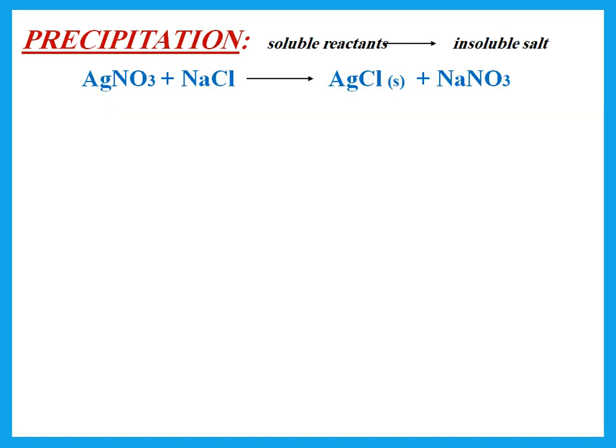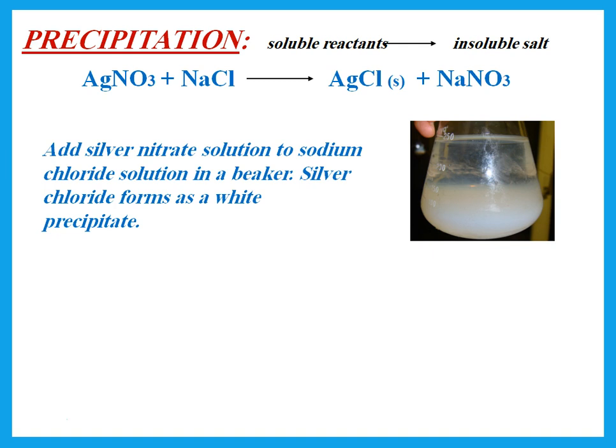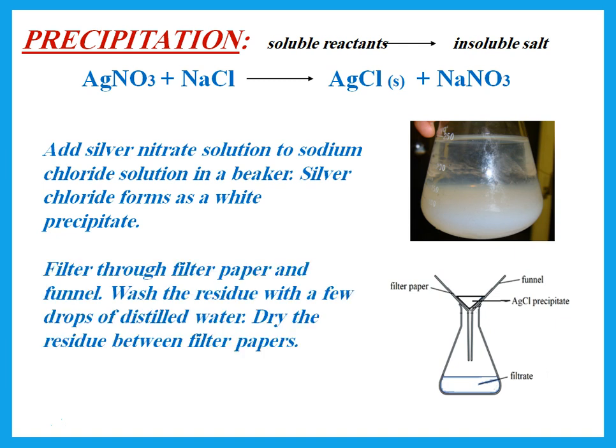The other method is precipitation. For precipitation, what we're trying to prepare is insoluble. For example, silver chloride is insoluble. To make it, we start with two soluble things: silver nitrate (all nitrates are soluble) and sodium chloride (all sodium salts are soluble). We add the silver nitrate solution to the sodium chloride solution. Silver chloride forms as a white precipitate — a solid formed from the reaction of two solutions. We then filter, and the residue is the silver chloride. Wash with a few drops of distilled water and dry between filter papers.